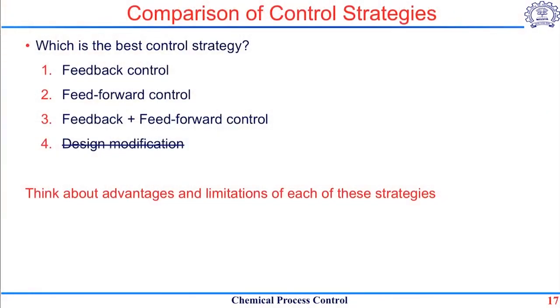So we have seen these three different control strategies as well as one design modification, all of which can give you disturbance rejection for this case. Now pause the video and try to find out or compare which of these is the best way to regulate the disturbance or to maintain the height inside this tank by finding out what are the advantages and disadvantages of each. Let us now go through all four strategies and try to find out what are their advantages and limitations, and then we will try to answer which among these is the best control strategy.